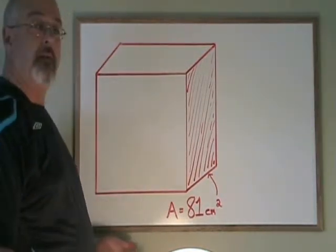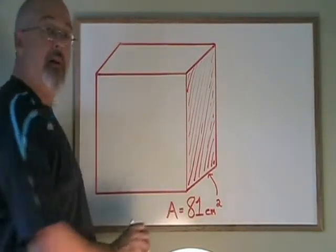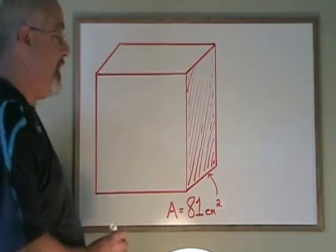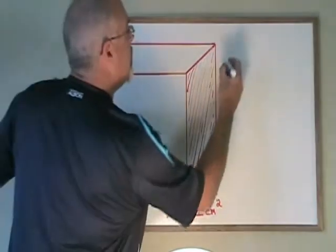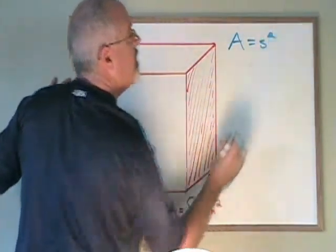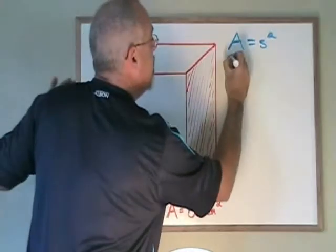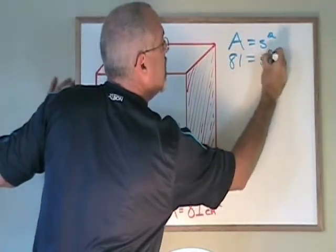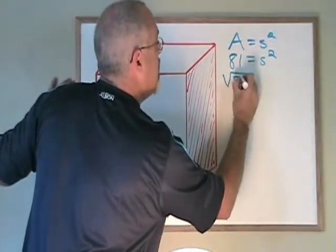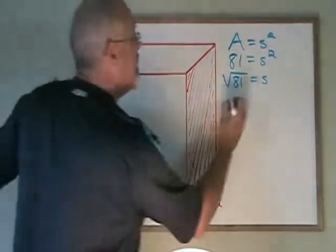Since the faces of a cube are squares, if we want to know the side length given the area of that square, we have to use the area of a square formula to find the side length. The area of a square formula is A equals side squared. Plugging in 81 as our area, we get 81 equals s squared. The square root of 81 will be equal to the length s. The square root of 81 is 9.